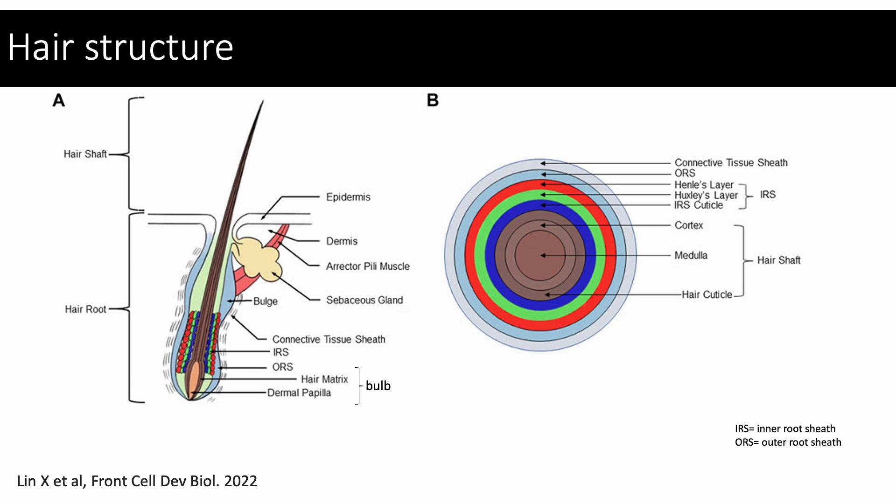Attached to the bulge region is the arrector pili muscle. When the arrector pili muscle contracts, it pulls the hair up, giving goosebumps. Another important structure is the sebaceous gland. Sebaceous glands produce sebum which protects the hair shaft and acts as a natural conditioner. The lowest portion of the hair root is the bulb region, which encompasses the dermal papilla and the hair matrix. It also contains melanocytes which give hair its colour.